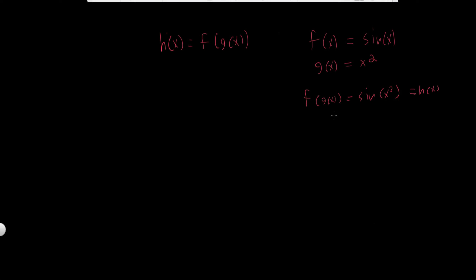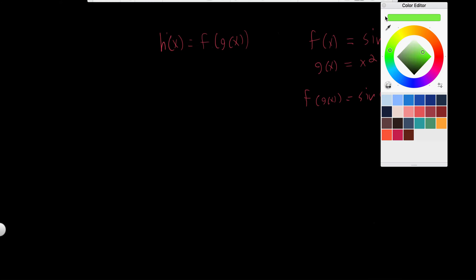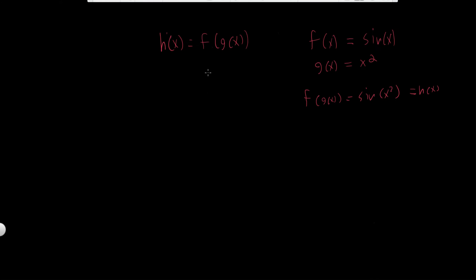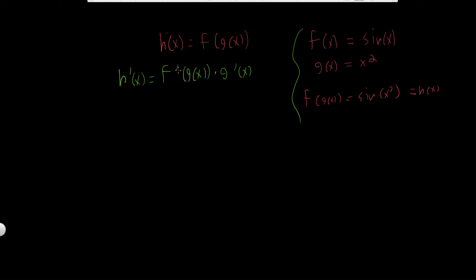Now, I want to introduce how to take the derivative of composite functions, and the way we do this is by using something called the chain rule. The general format is: h prime of x equals f prime of g of x, times the derivative of the inside. This is why it's called the chain rule — it's a chain where you take the derivative of the whole thing and then multiply it by the derivative of what's inside, a chain of products of functions.